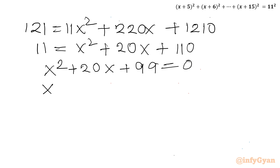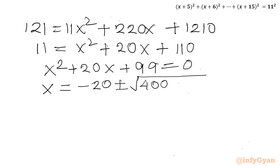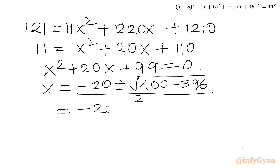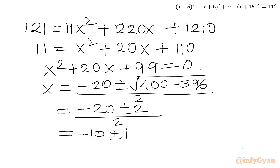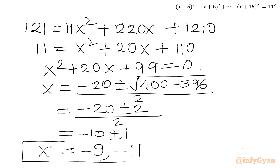Applying the quadratic formula: x = (−b ± √(b²−4ac)) / 2a = (−20 ± √(400−396)) / 2 = (−20 ± 2) / 2 = −10 ± 1. With the plus sign, x = −9; with the minus sign, x = −11. So these are our two solutions.